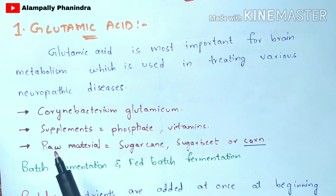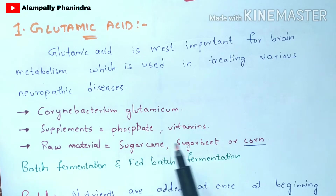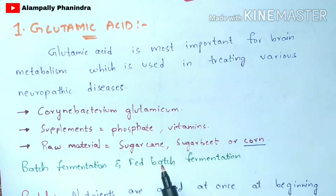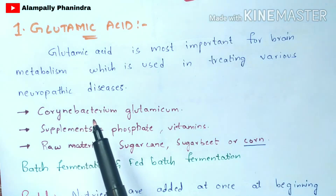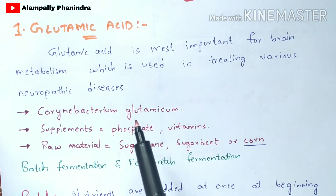The raw materials used for the production of glutamic acid are sugarcane, sugar beet, or corn. You can use any one of these raw materials for the production of glutamic acid using the bacterium Corynebacterium glutamicum.